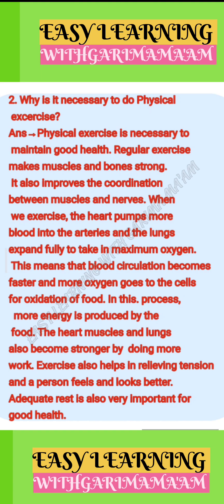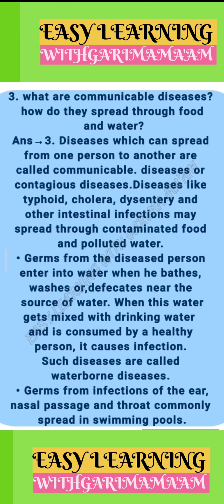Communicable diseases spread through food and water: Diseases which can spread from one person to another are called communicable diseases or contagious diseases. Diseases like typhoid, cholera, dysentery, and other intestinal infections may spread through contaminated food and polluted water. Germs from a diseased person enter water when they bathe, wash, or defecate near the source of water. When this contaminated water gets mixed with drinking water and is consumed by a healthy person, it causes infection — such diseases are called waterborne diseases.